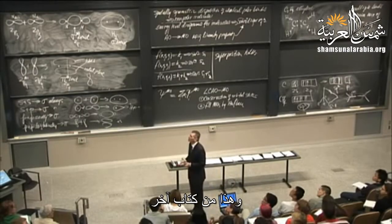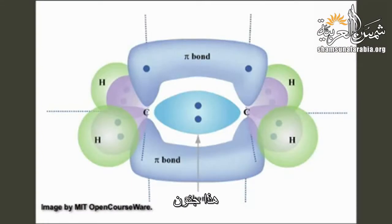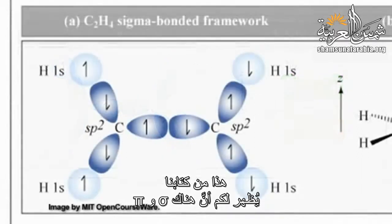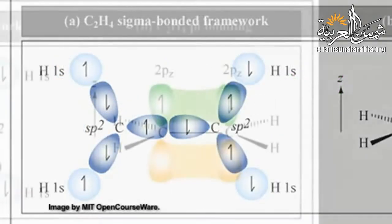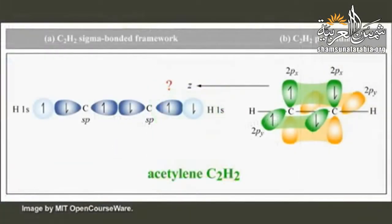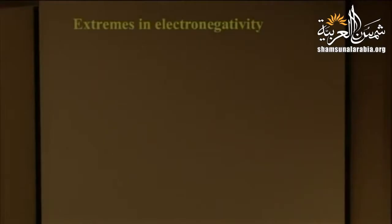Here are cartoons from textbooks illustrating the sp2 orbitals, the unmixed p orbitals, and the resulting sigma and pi bonds in ethylene. The textbook uses two colors on the lobes — I'd caution against that since it implies electrons stay in separate lobes, which is not the case.